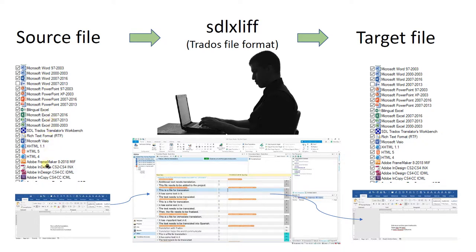This is an example of some of the file types that you can open with SDL Trados Studio. The actual list is much longer. So the idea is: source file, then sdlxliff where the translator does the work, and then target file.